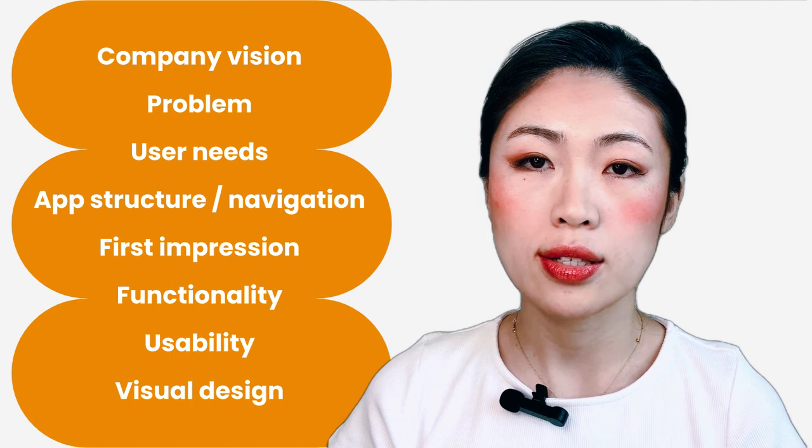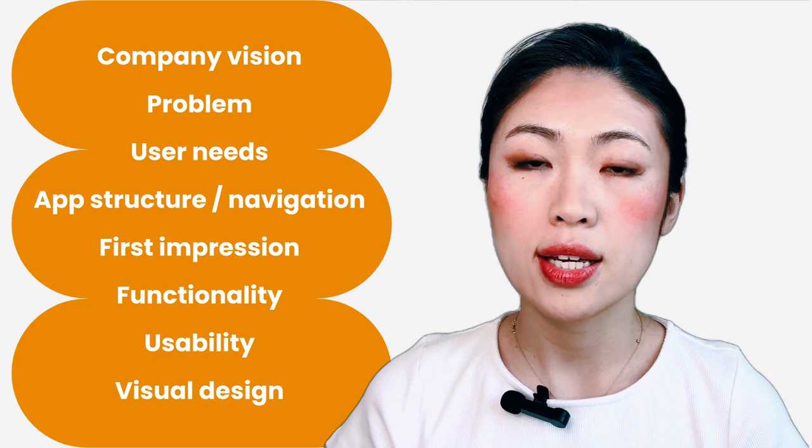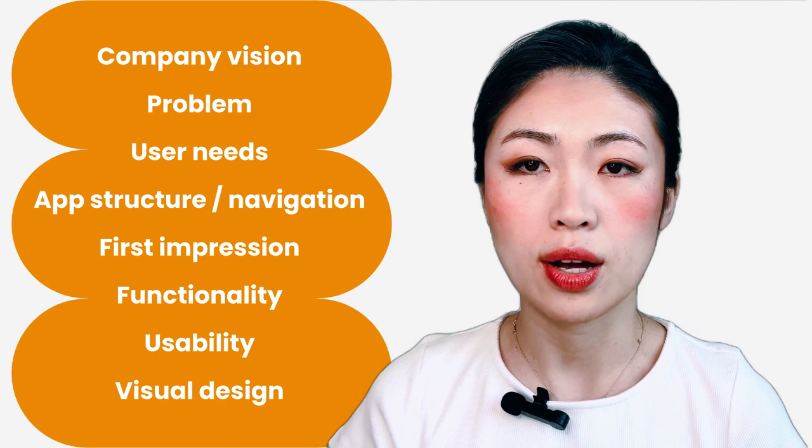Based on this observation, I have developed a systematic approach. Start with high-level talking points such as company vision, problem, user needs, app structure, and first impressions. Then move to a specific flow that focuses on functionality, usability, and visual design. This approach reduces stress during the process and shows your critical thinking skills from high level to detail.